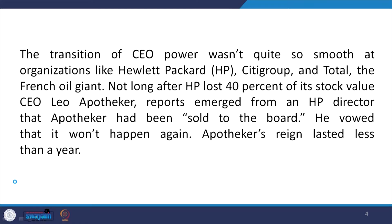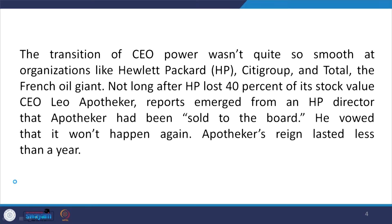The transition of CEO power was not quite so smooth at organizations like Hewlett Packard (HPE), Citigroup, and Total, the French oil giant. This is always a big issue. Not long after HPE lost 40 percent of its stock value, CEO Leo Apotheker — reports emerged from an HPE director that Apotheker had been oversold to the board. If these types of issues arise, the rest of the employees of the organization are getting troubled.